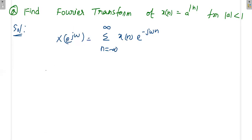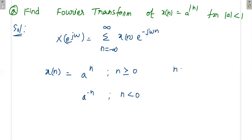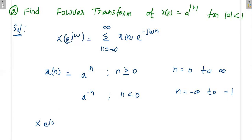So x[n] = a^|n| means: it is a^n when n ≥ 0, and a^(−n) when n < 0. That means when n goes from 0 to ∞ we apply a^n, and when n goes from −∞ to −1 we apply a^(−n). So X(e^jω) equals the summation where n goes from 0 to ∞ of a^n · e^(−jωn), plus the summation for the negative-n part.